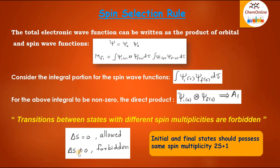If ΔS is not equal to 0, then it will be a forbidden transition, and if there is no change in the spin quantum number, ΔS equals 0, then that will be an allowed transition. We can also say that singlet to singlet, or doublet to doublet, or triplet to triplet transitions are spin allowed, while singlet to triplet or doublet to quartet transitions are spin forbidden.